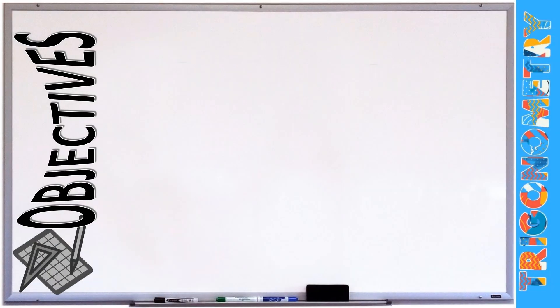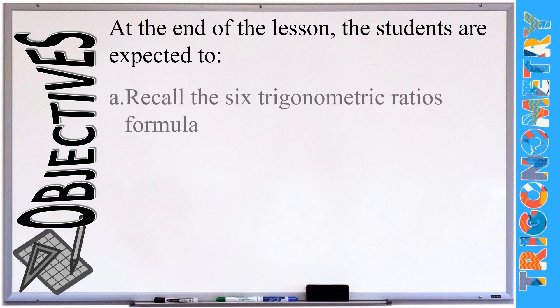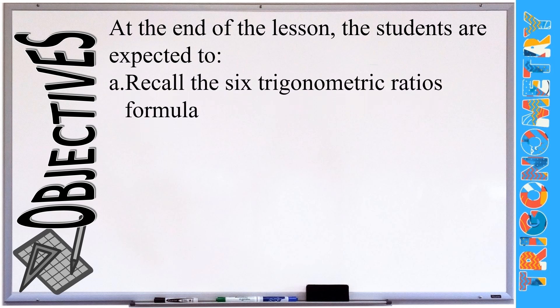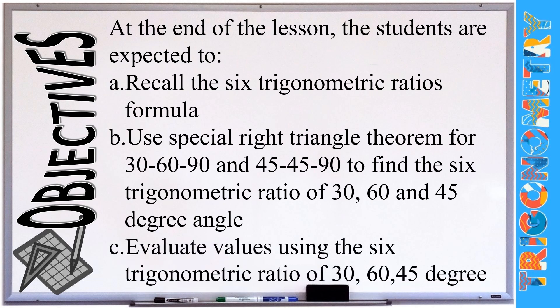Here are the objectives for our session today. At the end of the lesson, students are expected to recall the six trigonometric ratio formulas, use the special right triangle theorem for 30-60-90 and 45-45-90 to find the six trigonometric ratios of 30, 60, and 45 degree angles, and evaluate values using those six trigonometric ratios.